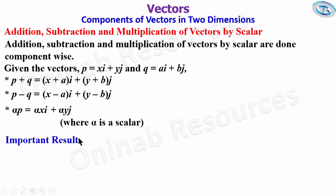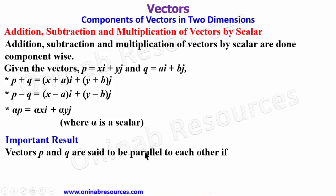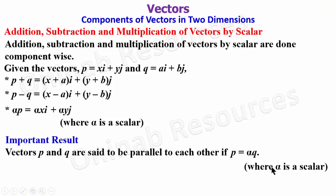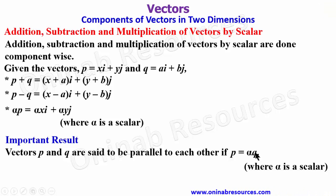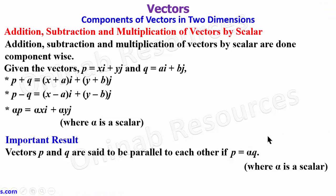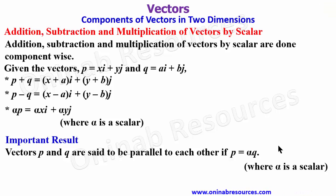We look at an important result: vectors p and q are said to be parallel to each other if p = αq, where α is a scalar. The unit vector in the direction of a given vector is parallel to the original vector, and finding its magnitude will give 1 — that is the property of a unit vector.